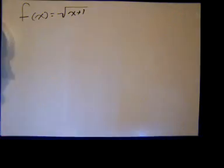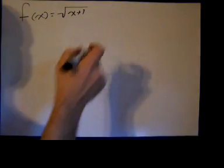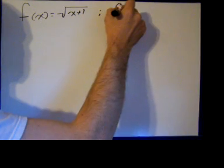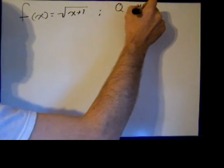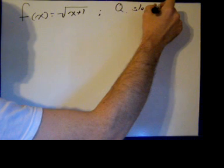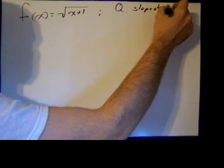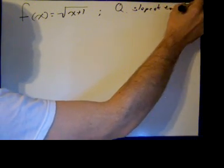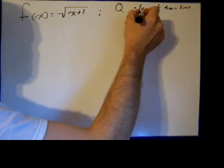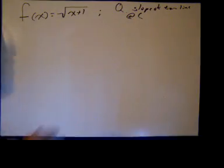And we're going to find the slope. So our question is, we want the slope of the tangent line at a point. And the point is (8, 3).